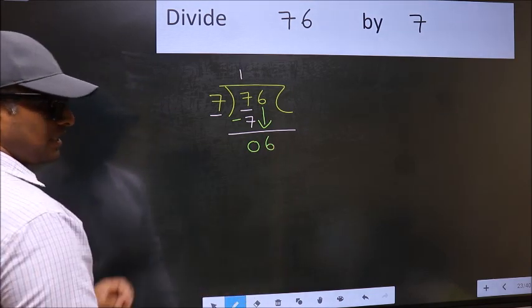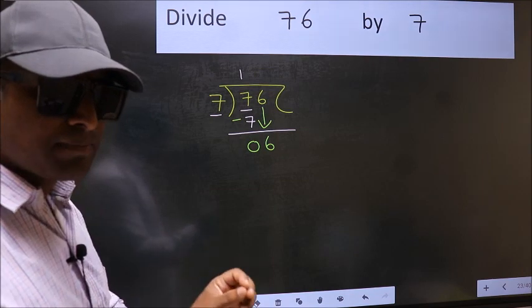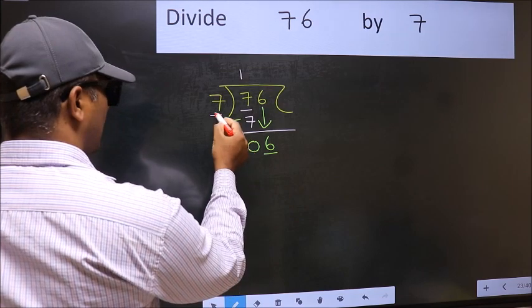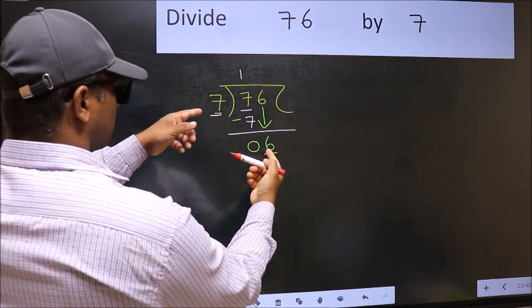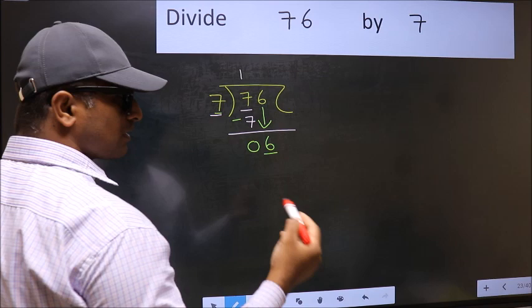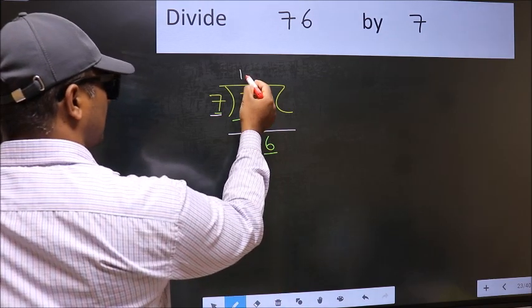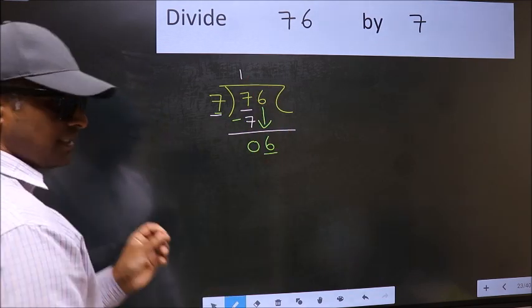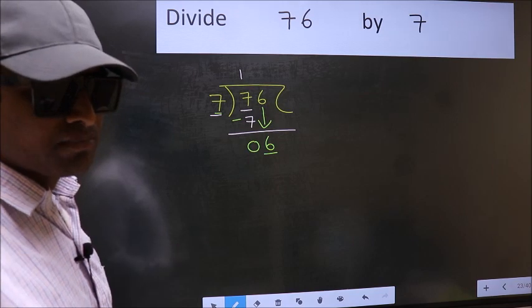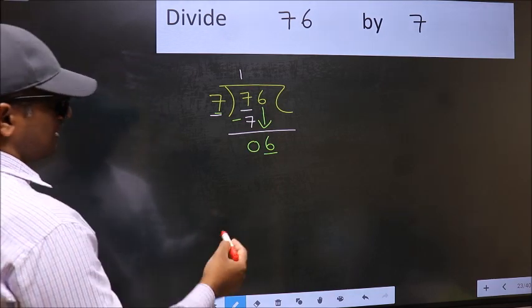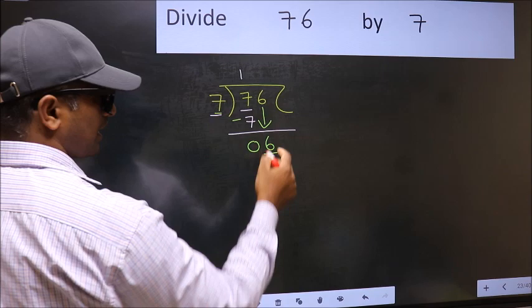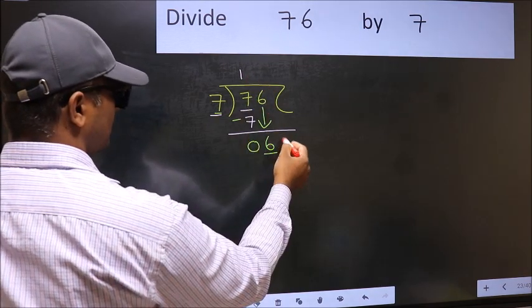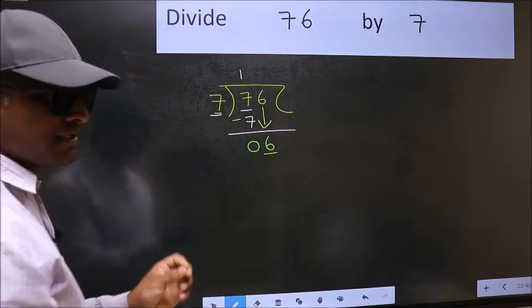After this step, the mistake happens. And the mistake is this. Here we have 6 and here 7. 6 is smaller than 7. So what many do is they directly put dot and take 0 which is wrong. Why is it wrong? Because just now you brought this number down. And in the same step, you want to put dot and take 0 which is wrong.